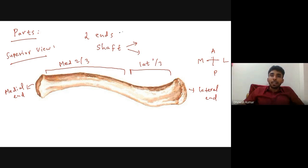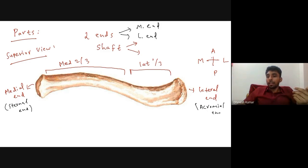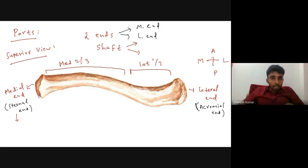The two ends are the medial end and the lateral end. The medial end is otherwise known as the sternal end because it articulates with the sternum. The lateral end is called the acromial end because it articulates with the acromion process of the scapula. The medial end is rounded and the lateral end is flattened.